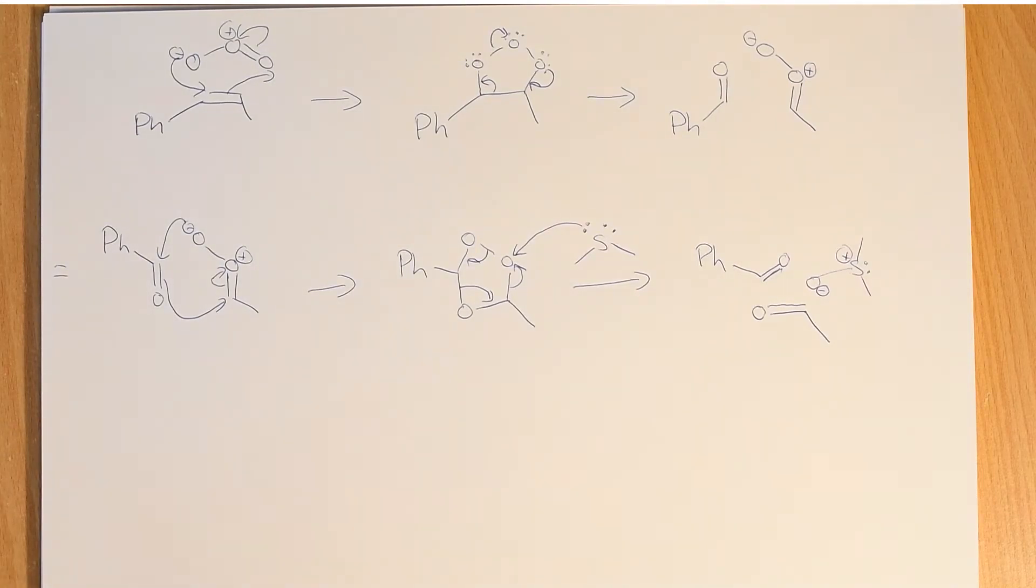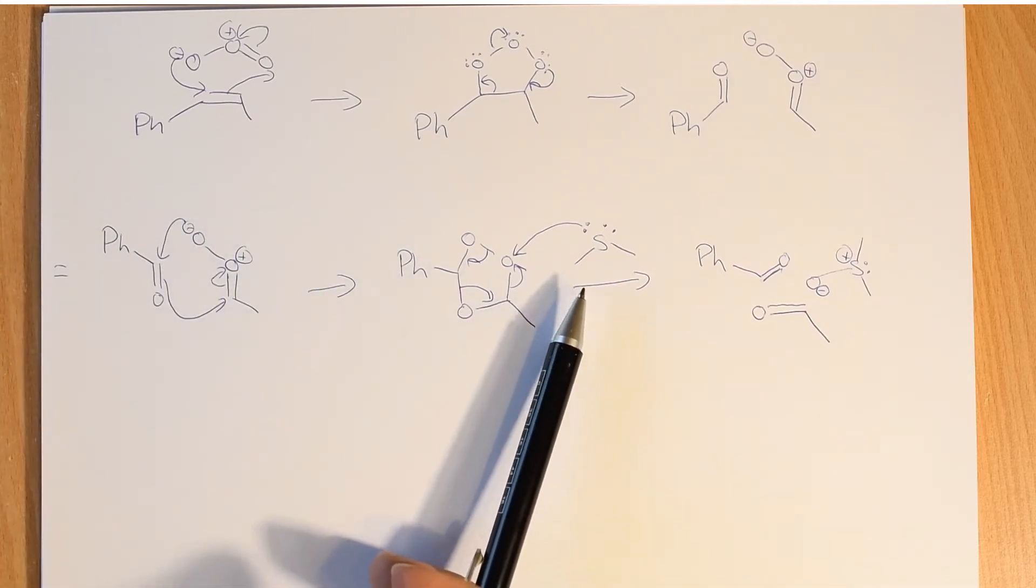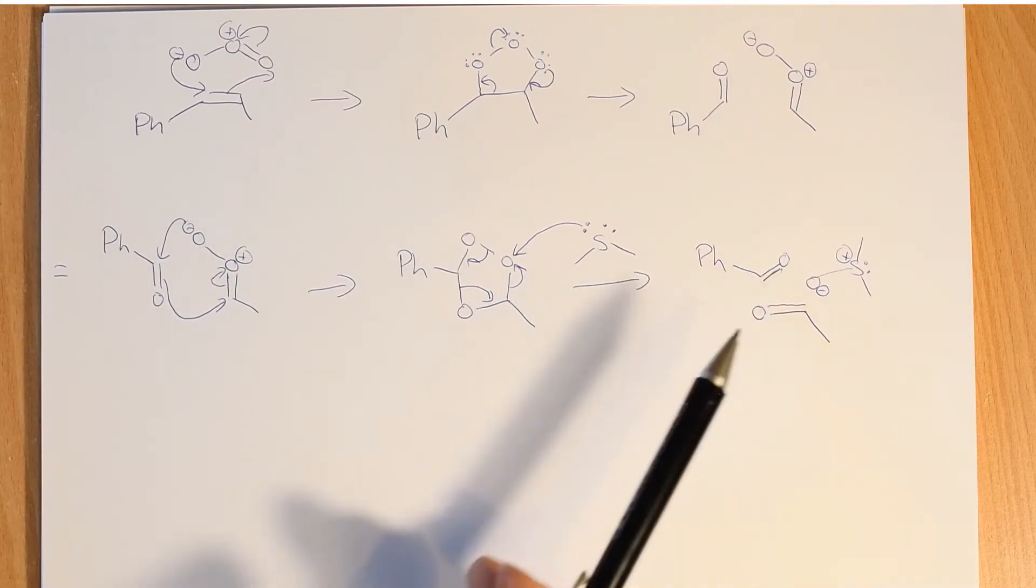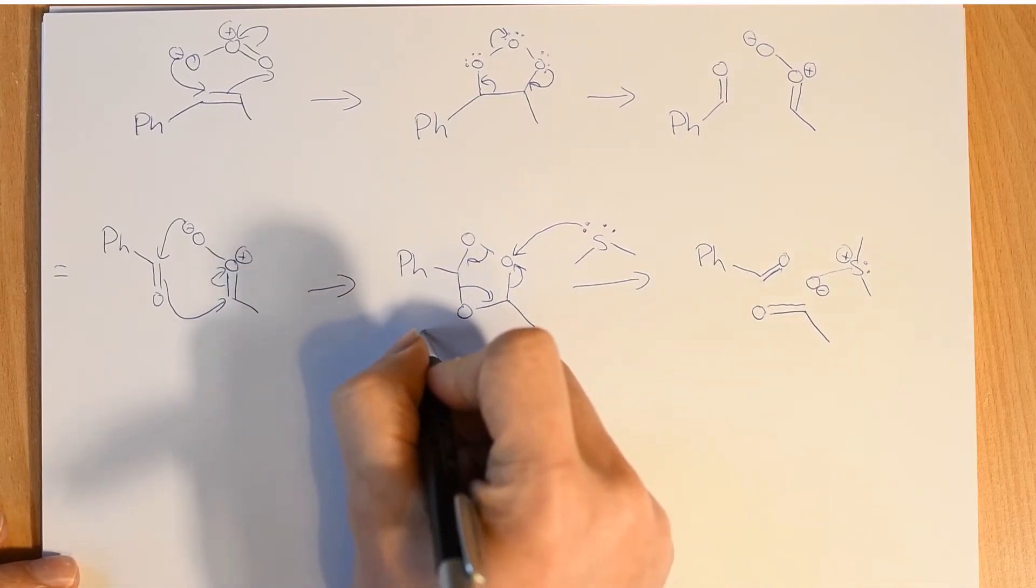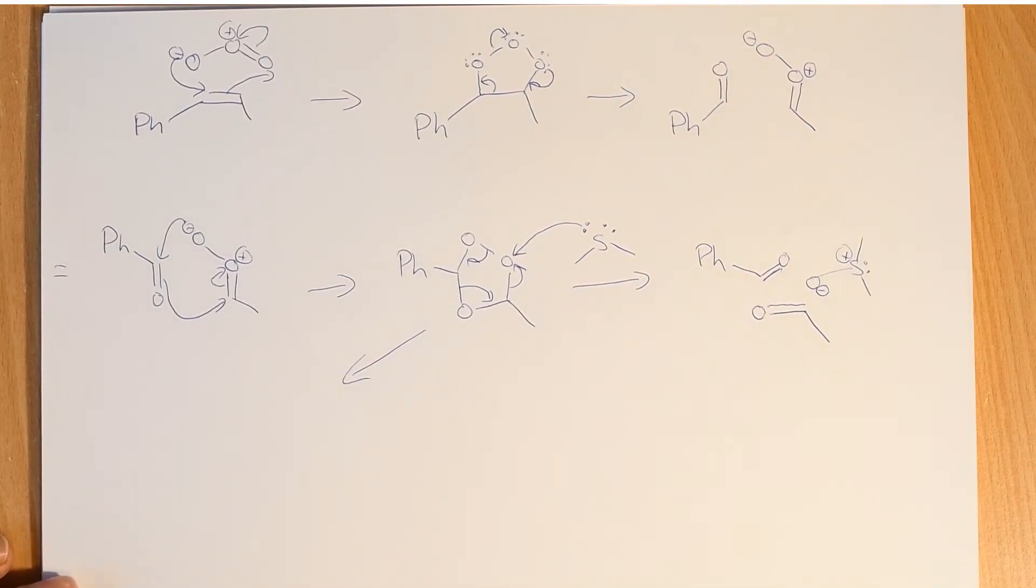So we can take an alkene and treat it with ozone, and then treat it with a mild reducing agent to make two aldehydes. Well, we can also treat it with a stronger reducing agent if we want. So it doesn't have to be DMS, and we don't have to get aldehydes.